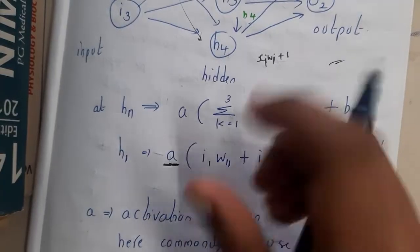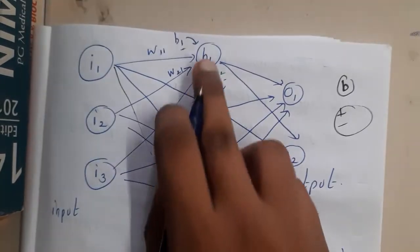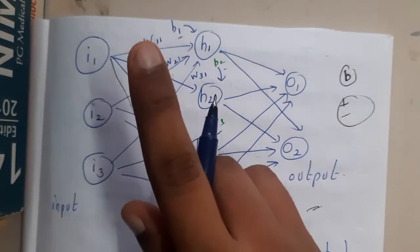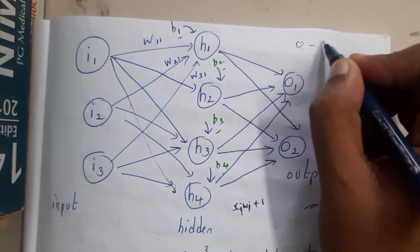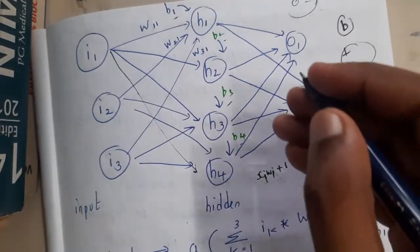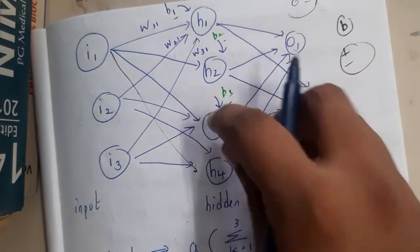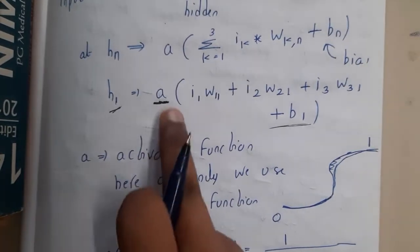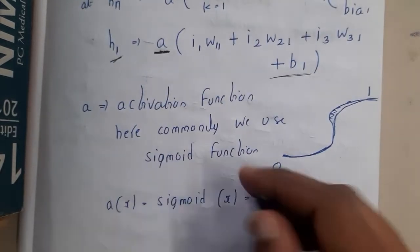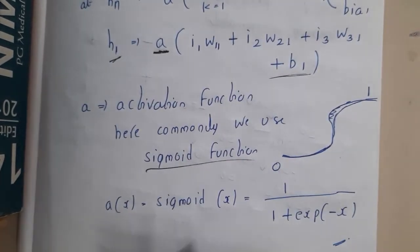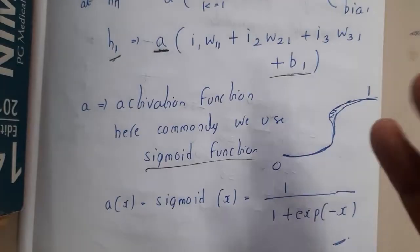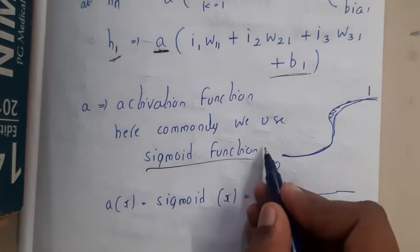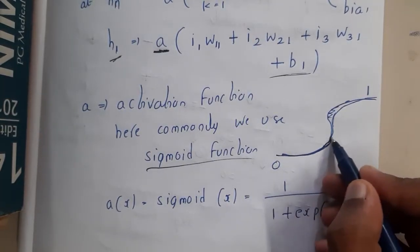Based on that value, you will be getting the value at h1. Remember one more thing: in most situations, these values will range between 0 and 1 only. So h1 will be the activation function. We will be using the sigmoid function because multi-layer perceptrons are a bit complex, so we are going with a complex function.